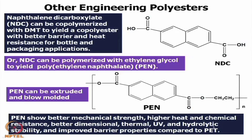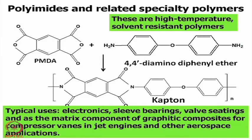PEN can compete with PET — PET is made from a single phenyl ring containing acid, terephthalic acid or DMT, whereas PEN contains a naphthalene ring. Due to the presence of the naphthalene ring, PEN shows improved properties over PET. These engineering polyesters contain phenyl rings, cyclohexane rings, and naphthalene rings.